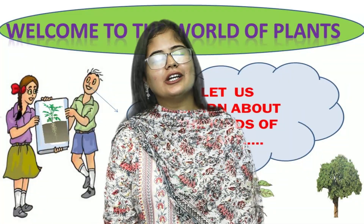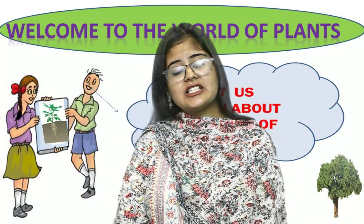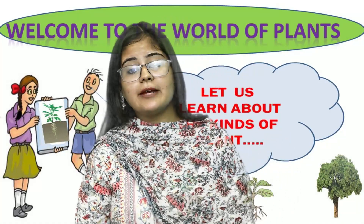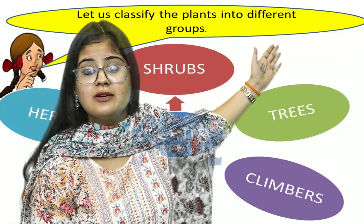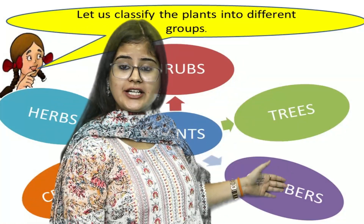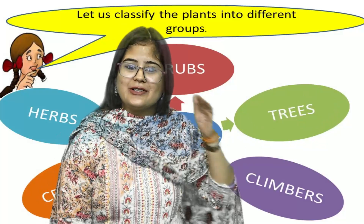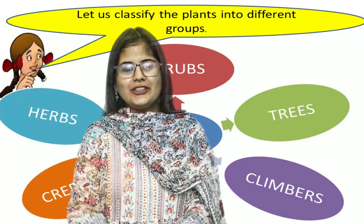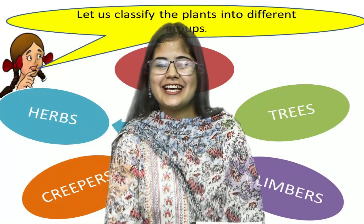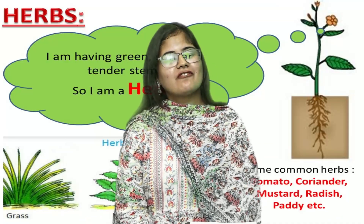So, I welcome you all to the world of plants! Plants are classified into basically five types: herbs, shrubs, trees, creepers, and climbers. Are you all excited? Let's move on to our very first classification.